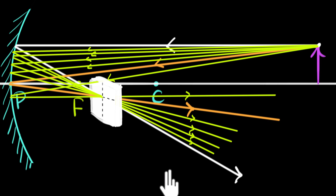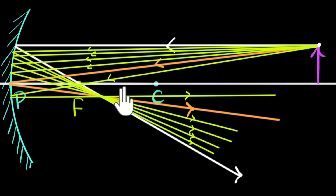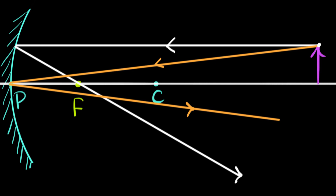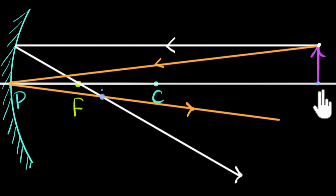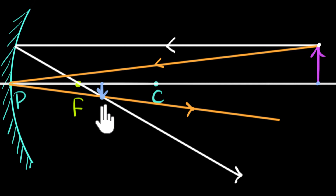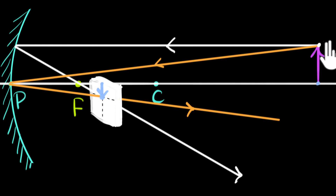To figure out where the image is formed, we need to find where all the rays intersect. Since they all intersect at the same point, just two rays of light are enough. We can say the image of this point is over here, and similarly constructing images of all other object points, the image forms between F and C. It is inverted, real because we can capture it on a screen, and diminished in nature.